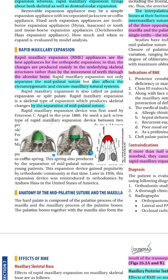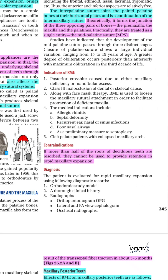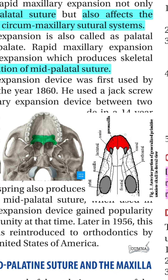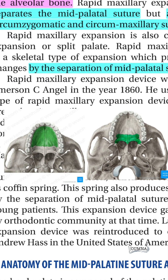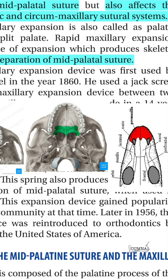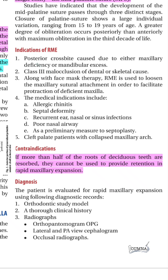The rapid maxillary expansion (RME) appliances are the best appliances for orthopedics, which means that the changes produced affect the skeletal structures mainly. The key structure is the mid-palatine suture, which connects the pre-maxilla, the palatine process, and the maxillary process. These three bones are connected by this midline palatine suture, and this suture is our main focus when applying force to achieve the desired expansion.